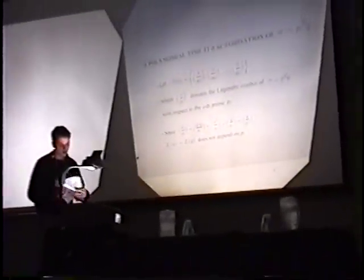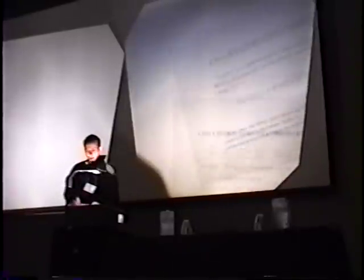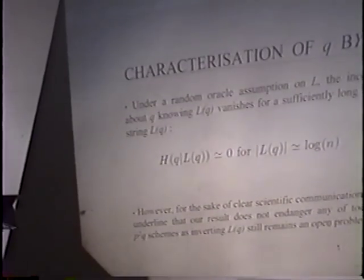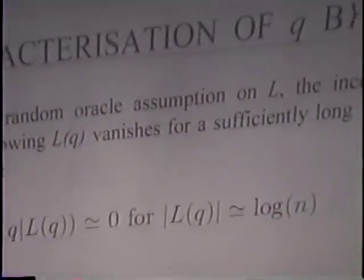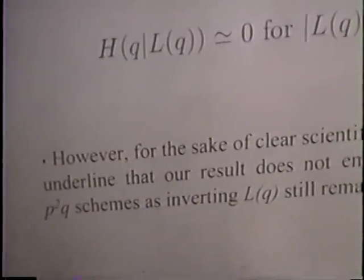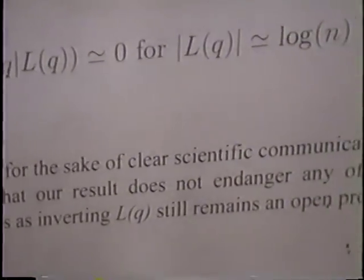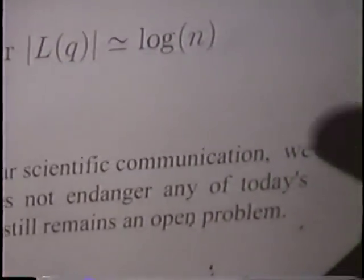And it's possible to show that under the assumption that the function L(Q) is a random oracle, the uncertainty about Q vanishes for a sufficiently long string L(Q). But of course, this result does not endanger any of today's P²Q schemes, because inverting L(Q) is a hard problem. That's it.